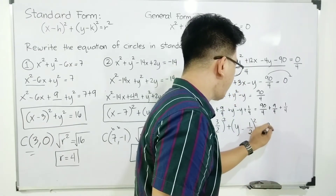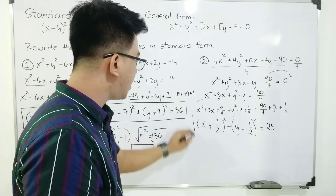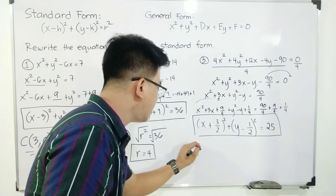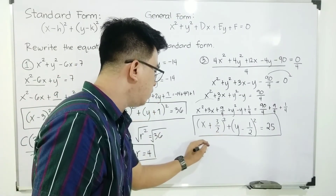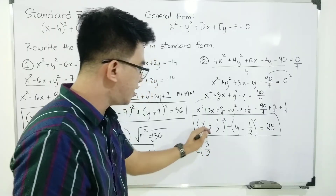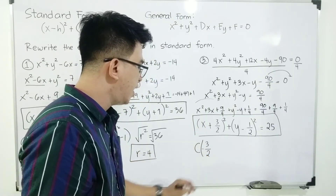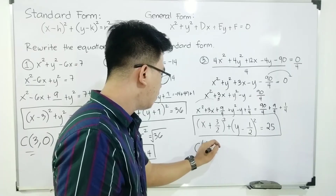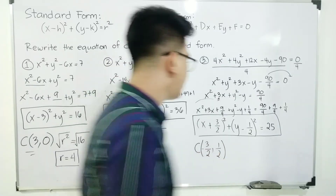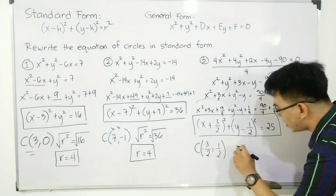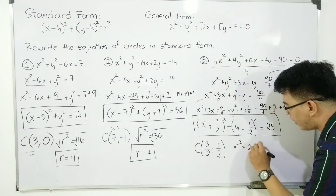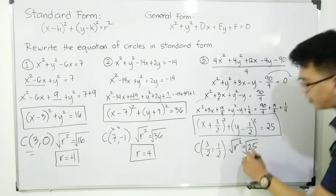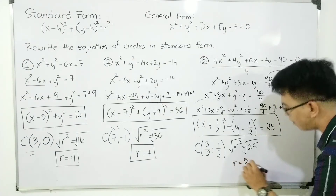Now to get the center: since x plus 3 over 2 corresponds to h equals negative 3 over 2, the x-coordinate of the center is negative 3 over 2. For the y coordinate, we have negative 1 half, so the center is at (negative 3 over 2, 1 half). For the radius: r squared equals 25, so taking the square root gives r equals 5. So the radius is 5 units.